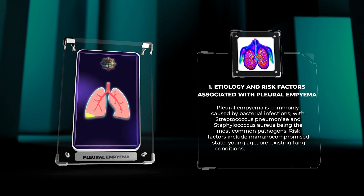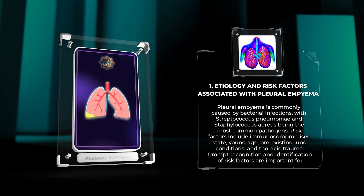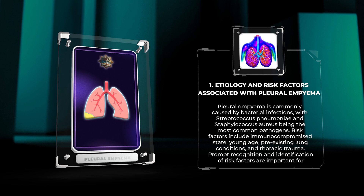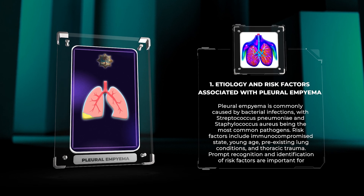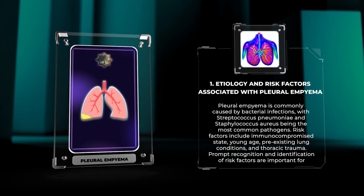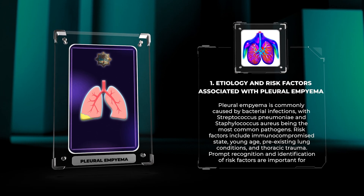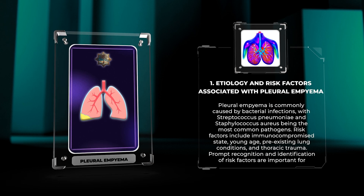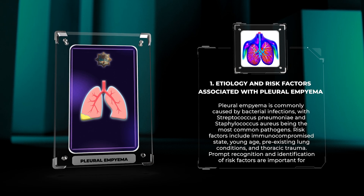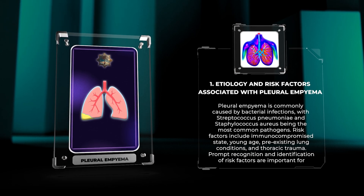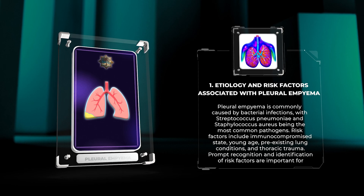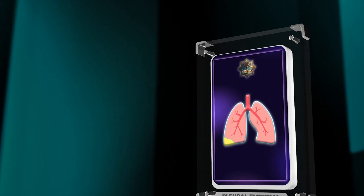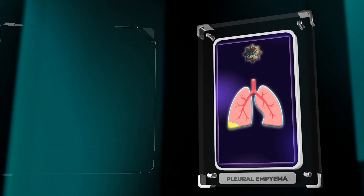Pleural empyema is commonly caused by bacterial infections, with Streptococcus pneumoniae and Staphylococcus aureus being the most common pathogens. Risk factors include immunocompromised state, young age, pre-existing lung conditions, and thoracic trauma. Prompt recognition and identification of risk factors are important for management.